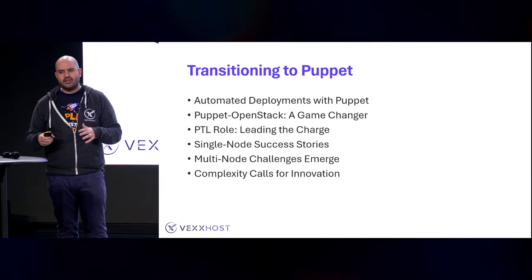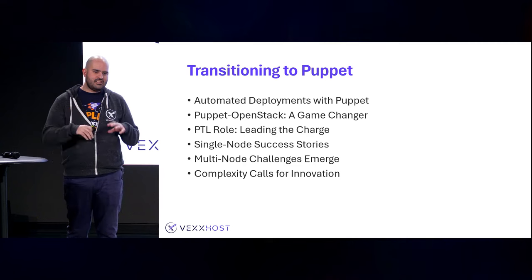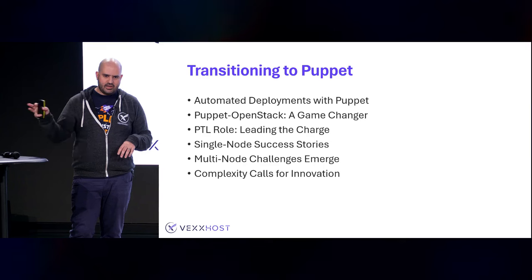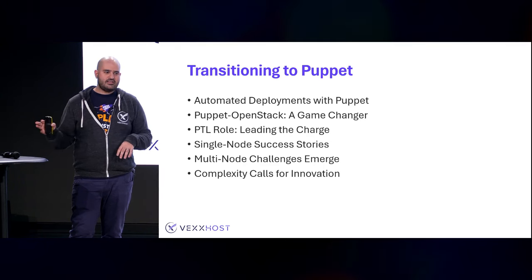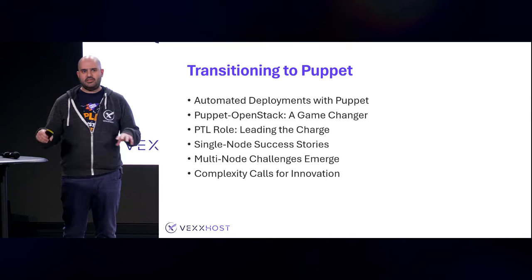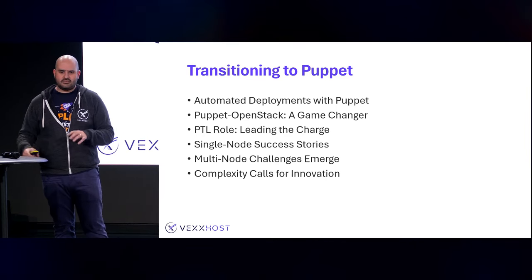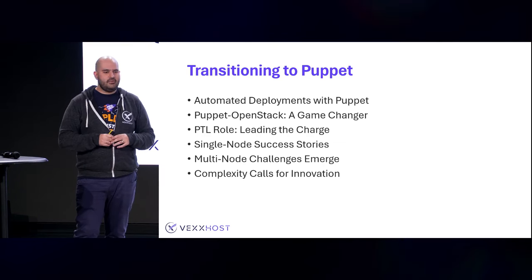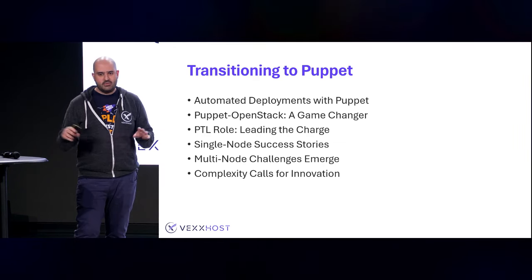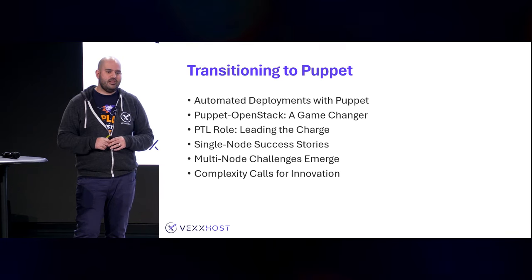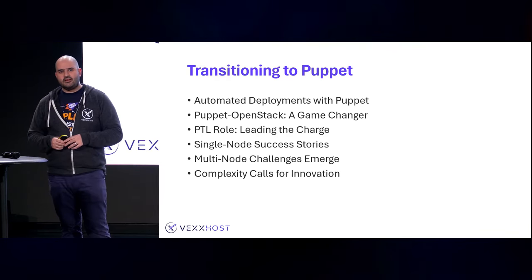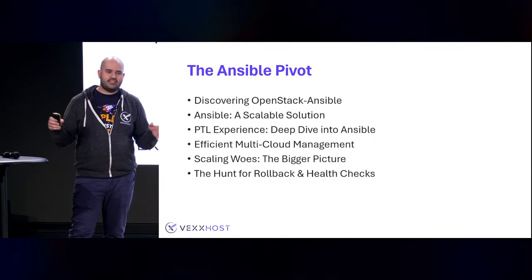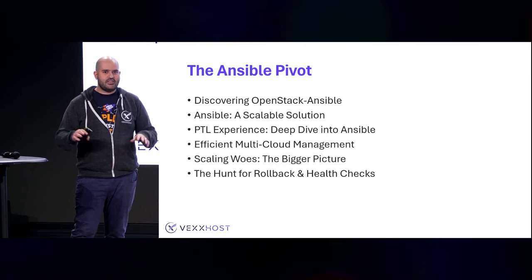Puppet worked really well for managing existing deployments — spinning up a new compute node, installing packages and configs, that was great. But we started seeing challenges around multi-node deployments. Customers started calling us saying your public cloud is great, but we want our own instance. And to spin something up from scratch, Puppet and multi-node just doesn't really go very well. So we looked at the lay of the land, and at the time that was Ansible — that was the hotness.